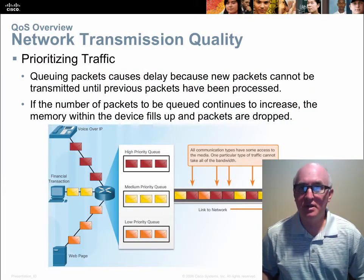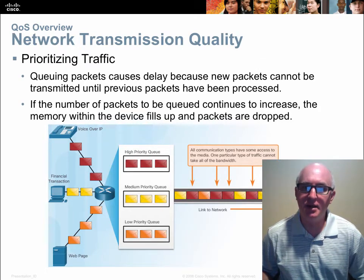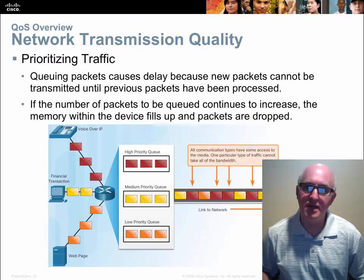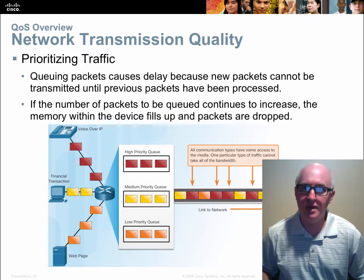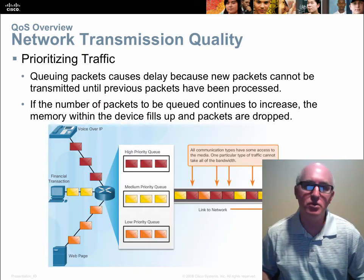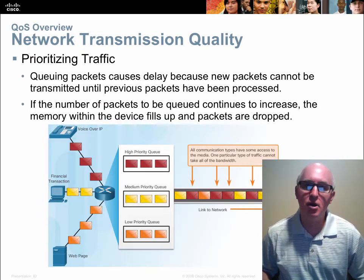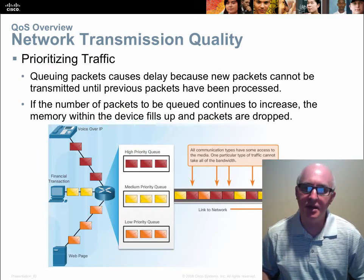Simply put, quality of service is about prioritizing traffic. It's queuing — in other words, it's a way to take traffic that comes into an interface and move it around. The traffic is packets and we can move those around into a new order to give some of them a higher priority. And there are various ways we can do that.